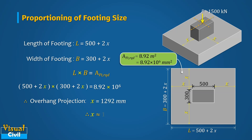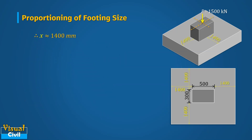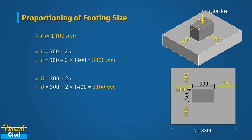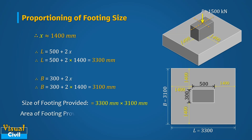Round up the value of x to a higher value so that we get more footing area than the minimum required. Then substitute the value of x into the expressions for length and width to get the final footing dimensions. The provided area of footing should always be more than the minimum required area.